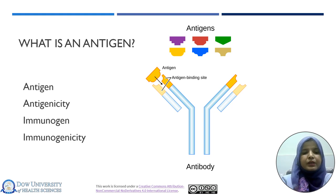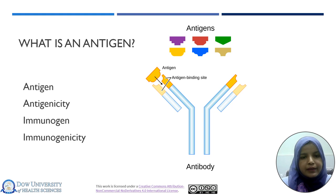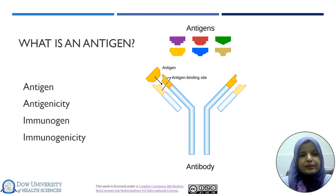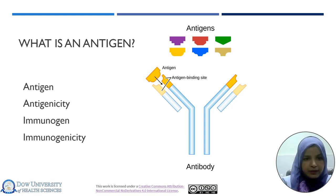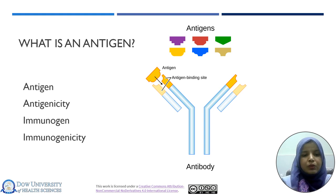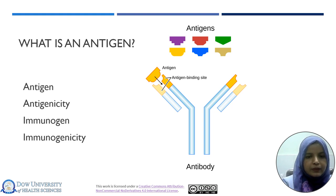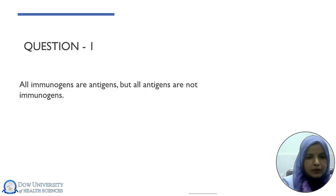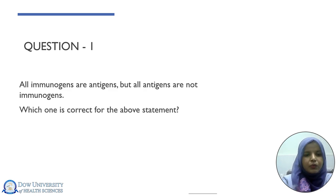Antigens are basically small molecules which only bind to the Antibody and effector molecules of the Humoral Immune response as well as T-cell receptor. While Immunogens have the tendency to elicit a strong immune response. The ability of Immunogens to elicit this immune response is called Immunogenicity. So all Antigens are not Immunogens, but all Immunogens are Antigens. All Immunogens are Antigen but all Antigens are not Immunogen — this statement is correct.